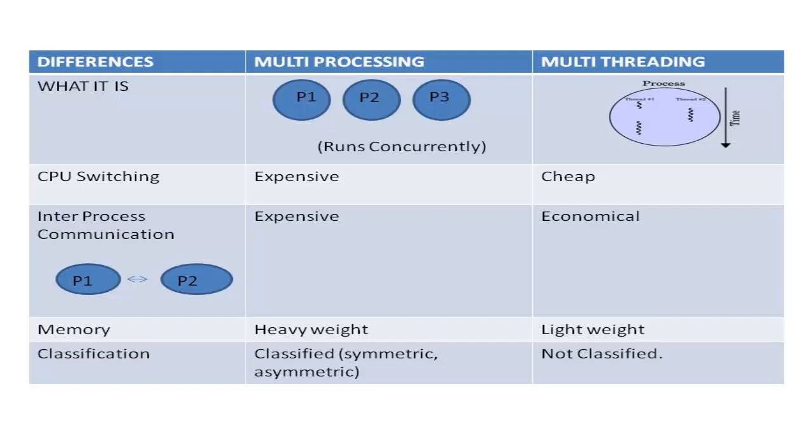In multi-processing, the CPU has to switch between multiple programs, so context switching is expensive. In multi-threading, the CPU has to switch between multiple threads. Here, context switching is cheap.